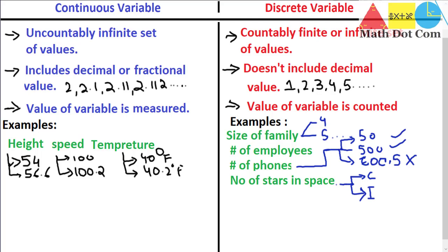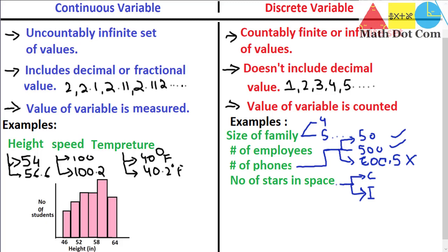Let's see the graphs of both variables. Here is the graph of a continuous variable — height in inches. One important thing about a continuous variable graph is that it is usually a histogram. In a histogram, there is no distance between the bars — they are exactly attached to each other. This histogram represents the continuous variable, showing ranges like 46 to 52, 52 to 58, and 58 to 64, which include decimal values as well.